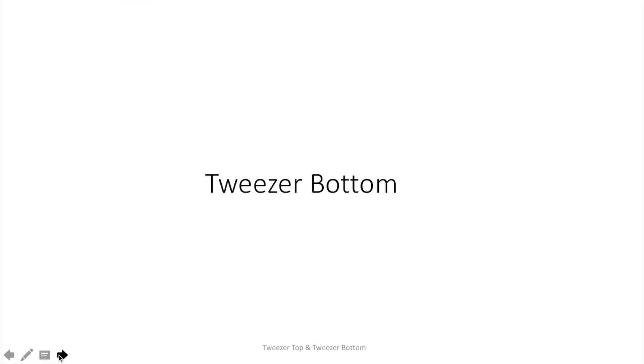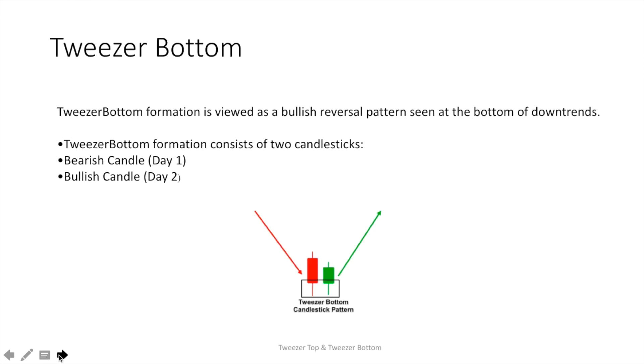Now the second pattern is the tweezers bottom. The tweezers bottom formation is viewed as a bullish reversal pattern seen at the bottom of a downtrend.